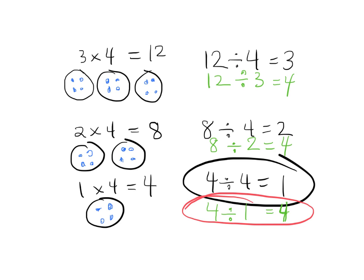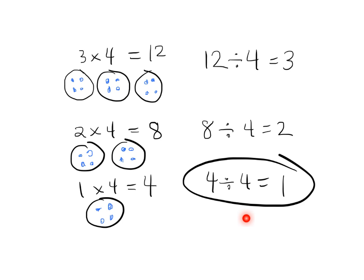And then similarly we can change this to 4 divided by 1 equals 4. This one is the beginnings of the rule that any number divided by 1 is itself. So this same multiplication scenario leads us to two discoveries about division. One, if you divide a number by itself you get 1. And the other, if you divide a number by 1 you get itself.